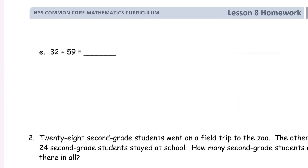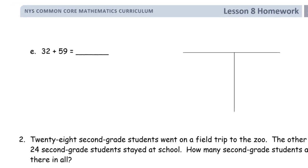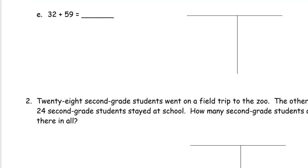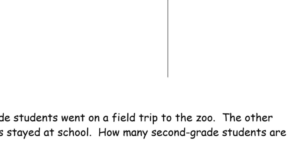And we've got one more of them here on the next page: 32 plus 59. Always start with the 1s digits first. 9 and 2 is 11, that's a 10 and a 1. And then add the 10s digits: 5 and 3 is 8, one more is 9.